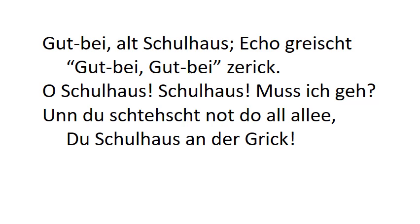The next verse: 'Und du stehscht noh do all allee.' We've seen the verb 'stehe,' which means to stand. 'Und du stehscht' — and you stand. 'Noh' means then. 'Do' means here. 'All' means all, and 'allee' means alone. 'Und du stehscht noh do all allee' — and then you stand here all alone. 'Du Schulhaus an de Creek' — you schoolhouse, 'an' means at, on, near, or by, and 'Creek' is a creek — the schoolhouse on or by the creek.